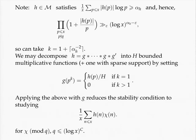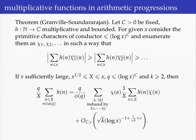So using this result, one can reduce the condition that the function has stable mean values in arithmetic progressions to studying correlations of the function h with characters of conductor bounded by log x to the C. That might be easier. In particular, looking back at the stability statement — if we want to show this quantity has a stable mean value as X varies, it would suffice to show that each of these correlations with characters is stable.